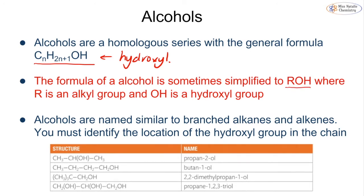The way that we name these is very similar to our branched alkanes, alkenes and our halogenoalkanes. The one thing that we must ensure is that we identify the location of the hydroxyl group, because we can get structural isomers — we can have propan-2-ol but we can also have propan-1-ol — and as we'll see, these two things can have different reactions. If we have more than one alcohol group then we use our prefixes: di-ol means two and tri-ol means three.